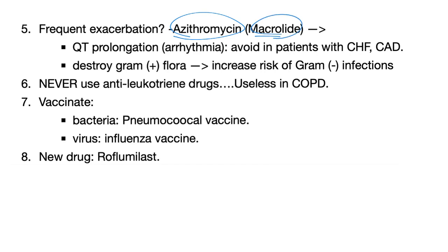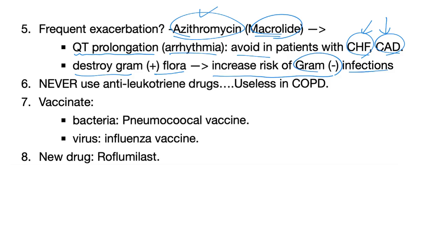If the patient experiences frequent exacerbations of COPD, use azithromycin, which is a macrolide. It could prolong the QT interval, leading to cardiac arrhythmia — please avoid in patients with coronary artery disease or congestive heart failure. Azithromycin destroys gram-positive flora and increases the risk of gram-negative infections. Never use anti-leukotriene drugs in COPD — they are useless.